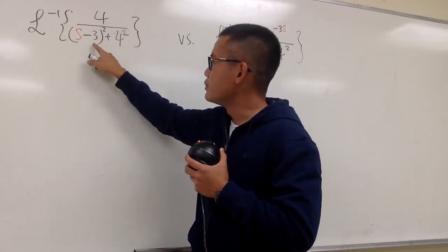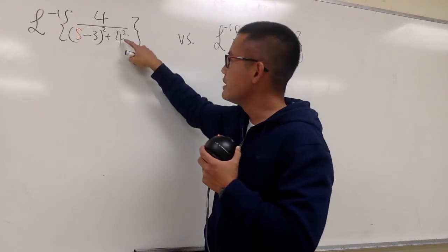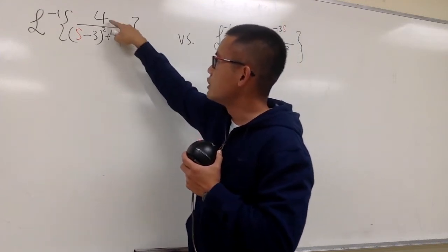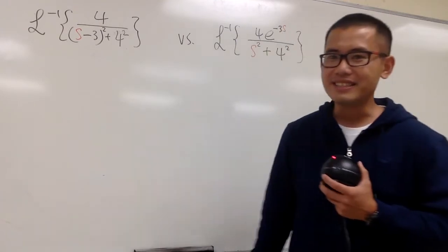We have 4 over s minus 3 in the parentheses and the square, and plus 4 square. As you can see, this 4 in the 4 square, it matches with this 4 on the top, right? So you know we have to get some kind of sine, isn't it?